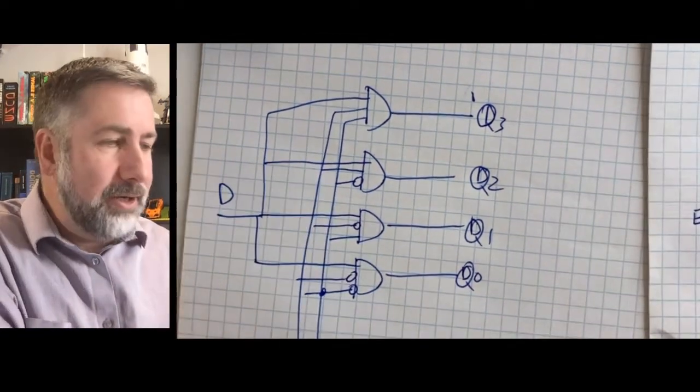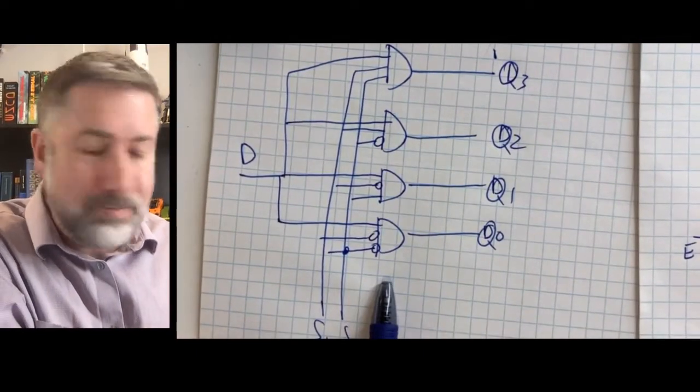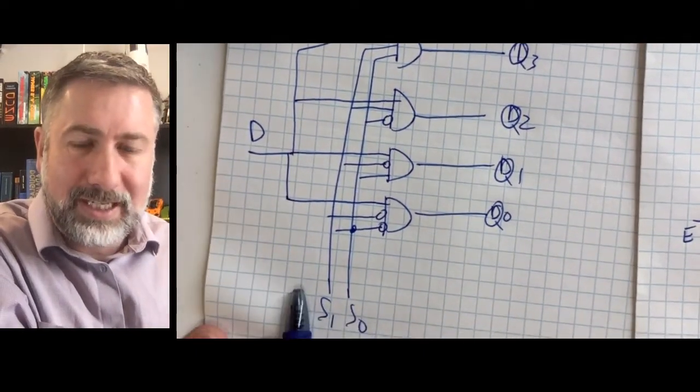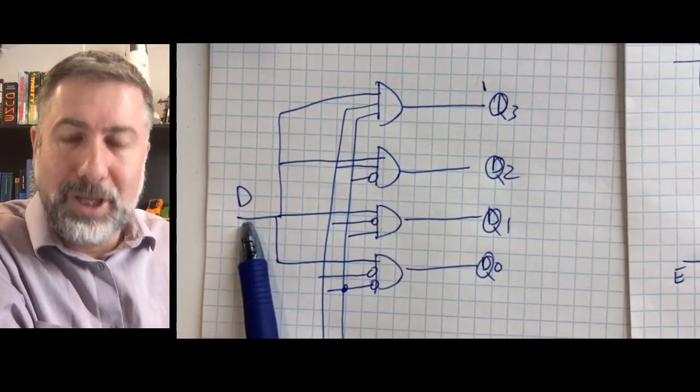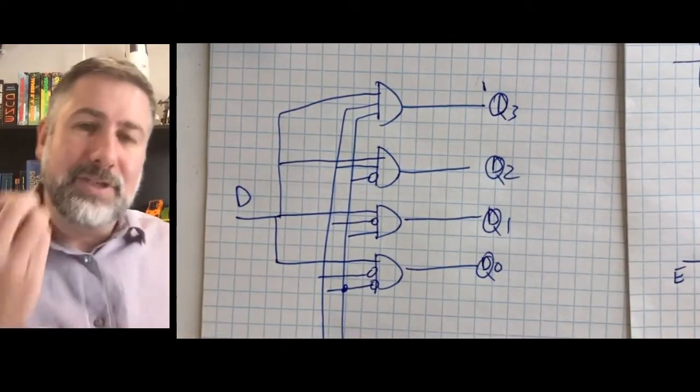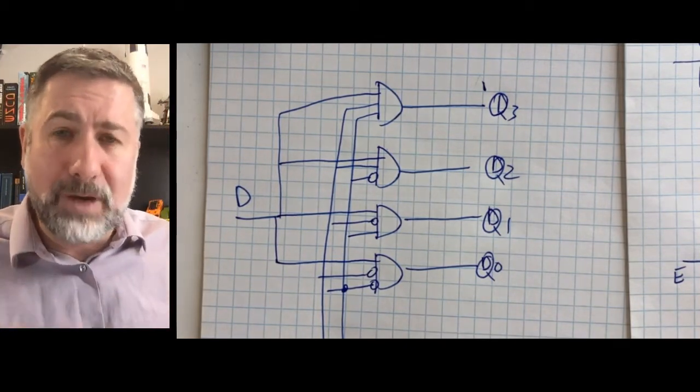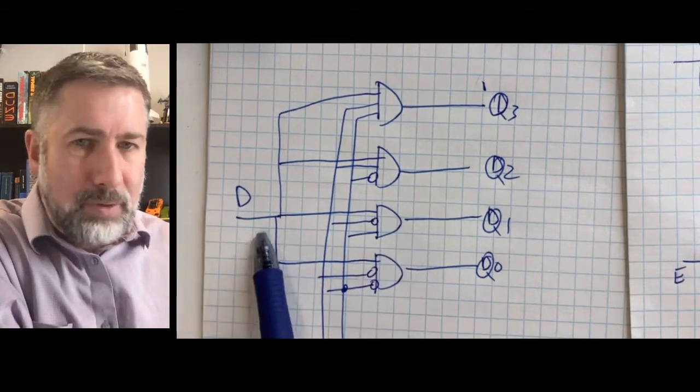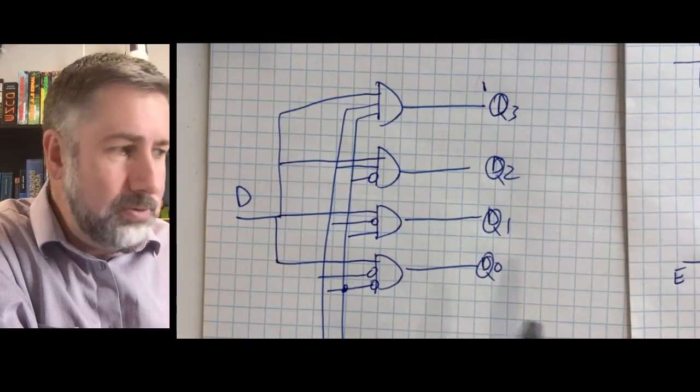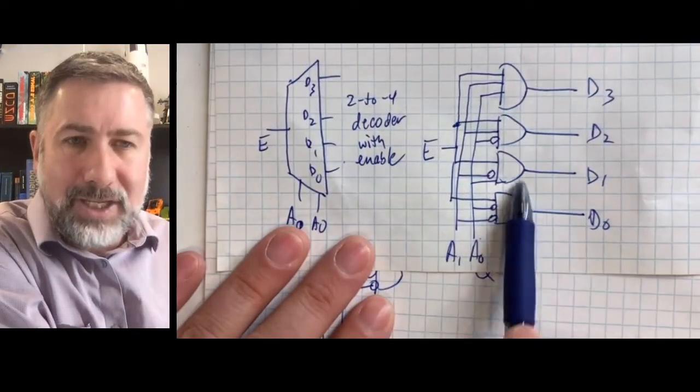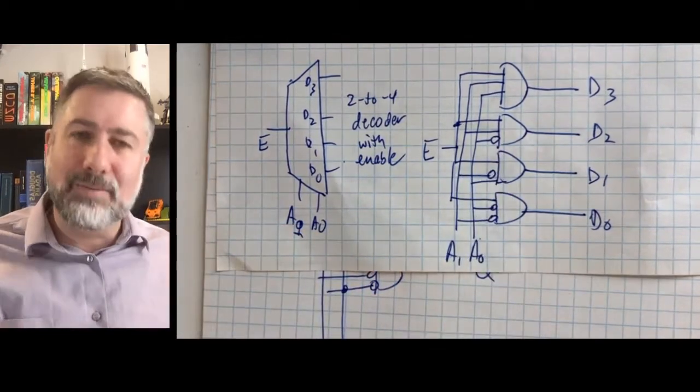In the case of the demultiplexer, the min term is selected by the address or in this case the select lines, and the output is equal to the input, which is exactly the same thing. If d is 0 the output is 0. If d is 1 the output is 1. So it's just a different way of thinking about the requirements. This routes the input d to one of the possible outputs q. This one activates one of the possible min terms d if enable is on. But it's the same device.